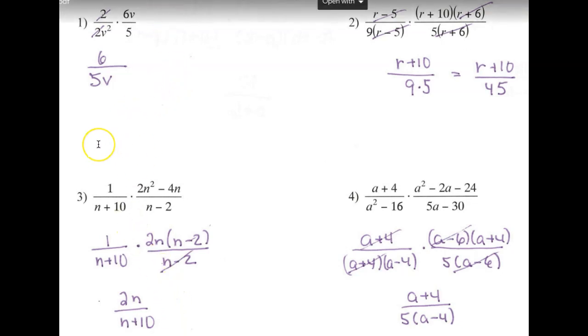Let's look at number one here. I've got twos that I can cancel. I've got a v in the numerator and a v in the denominator, which will simplify to this. So this will just leave me 6 over 5v.